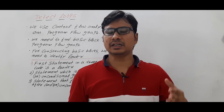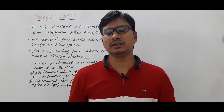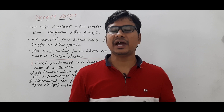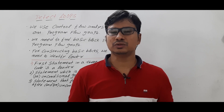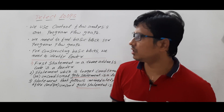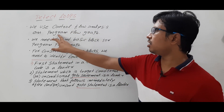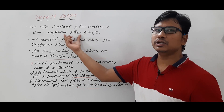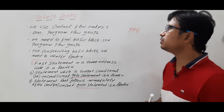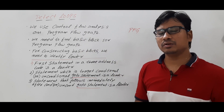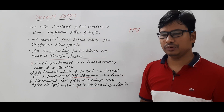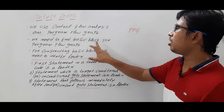Three-address code is a representation for the intermediate code which is generated by the intermediate code generator. Now in this video I want to discuss the steps involved in identifying or detecting the loops from the three-address code. We use control flow analysis on the program flow graph. First, we need to construct the program flow graph. On the program flow graph we need to do the control flow analysis. While doing the control flow analysis, if we identify any cycles in this graph, then we can say that there is a loop.